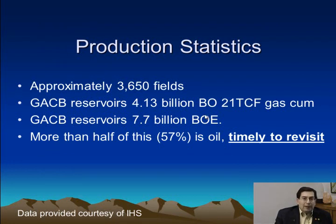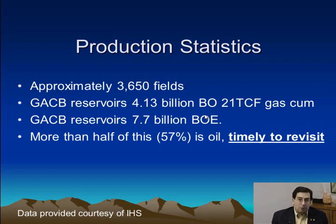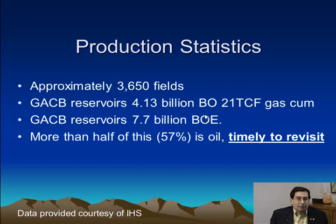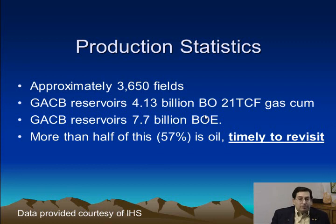Reviewing the production, there are about 3,650 fields that produce oil and gas from Cambro-Ordovician reservoirs — 4.1 billion barrels of oil and 21 TCF of gas — and it includes some gas giant fields. Taken together in barrels-of-oil equivalency, this is about 7.7 billion barrels, so it's clearly a very significant stratigraphic unit. Since the majority of the oil and gas equivalent is oil at 57%, it's timely to revisit these under current scenarios of high oil prices.